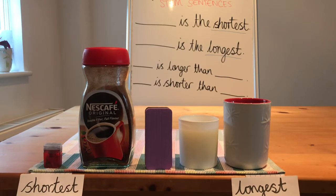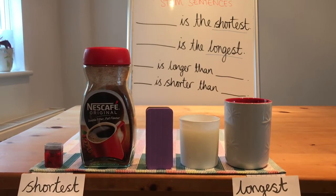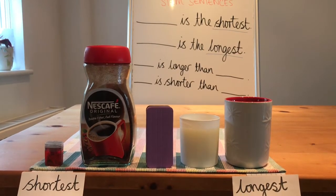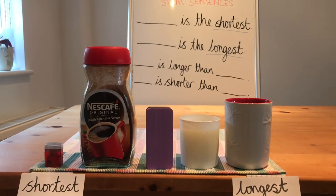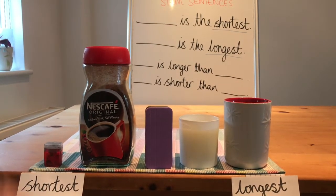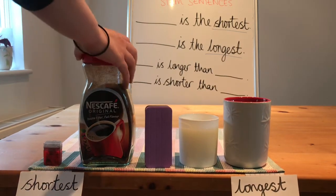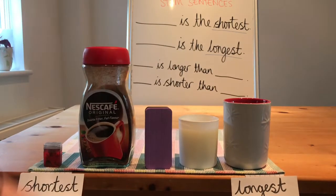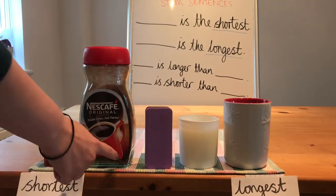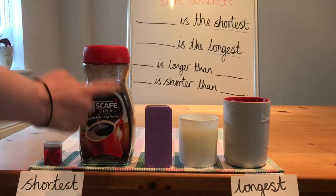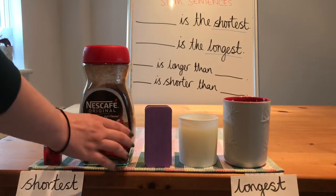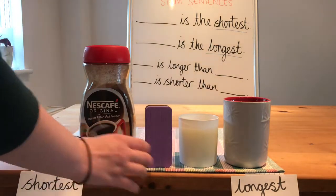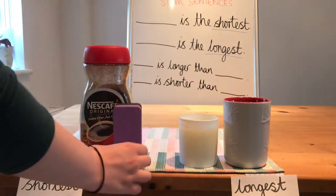Now let's look for the object with the longest length. We can see that this is quite clearly the coffee because the measurement from one end to the other is a lot bigger than the others.